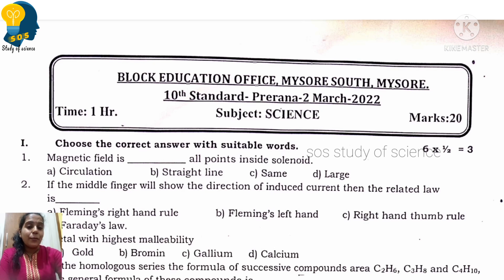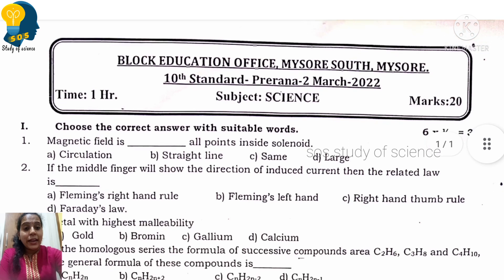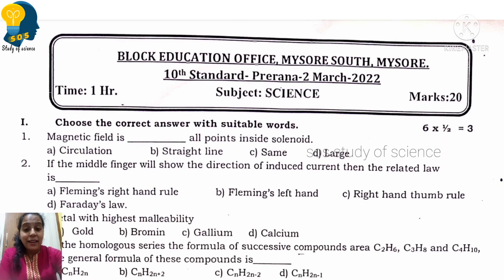Moving to next question. If the middle finger will show the direction of induced current, then the related law is. Obviously you know there are laws - Fleming's right hand rule, Fleming's left hand rule, motor rule, generator rule. Here the right answer is Fleming's right hand rule. According to Fleming's right hand rule, the middle finger will show the direction of induced current.